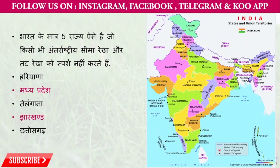There are 5 states in India that are landlocked — they do not touch any international boundary at all. Let's identify which states do not touch any international boundary.